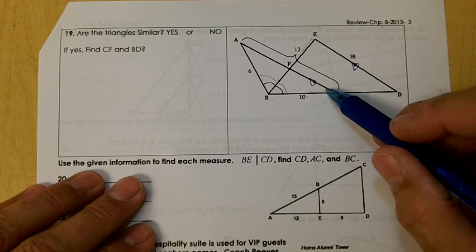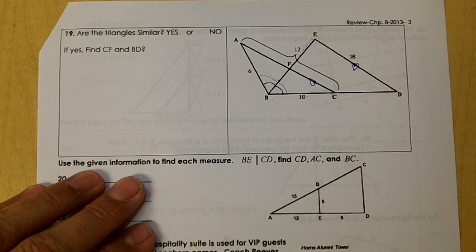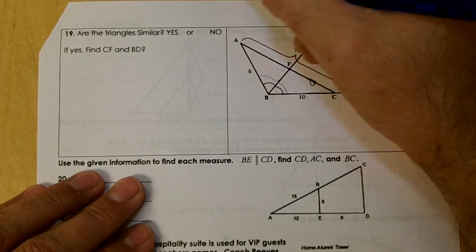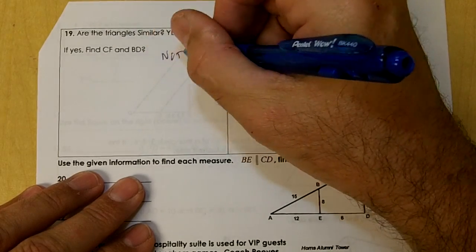We don't have enough information here to get this, do we? So these triangles would not be similar, not enough information.